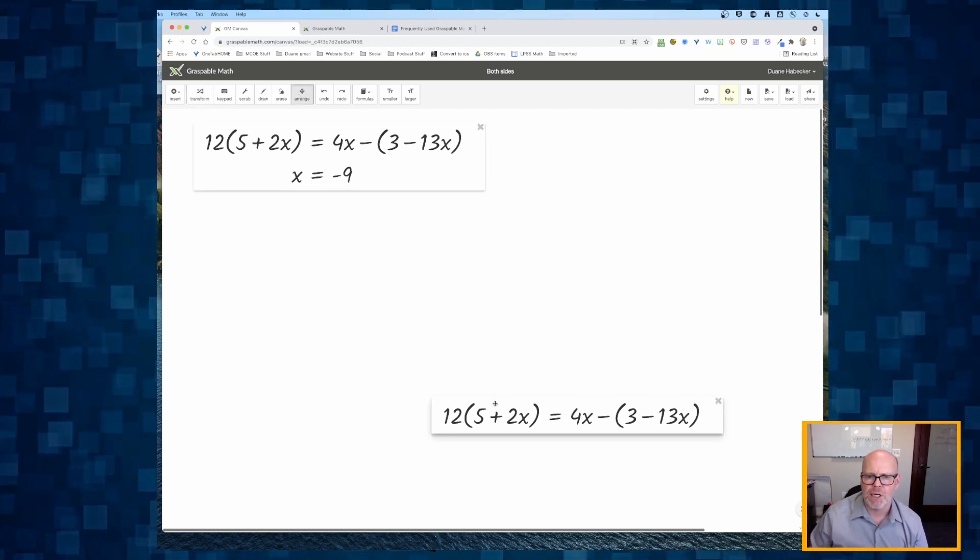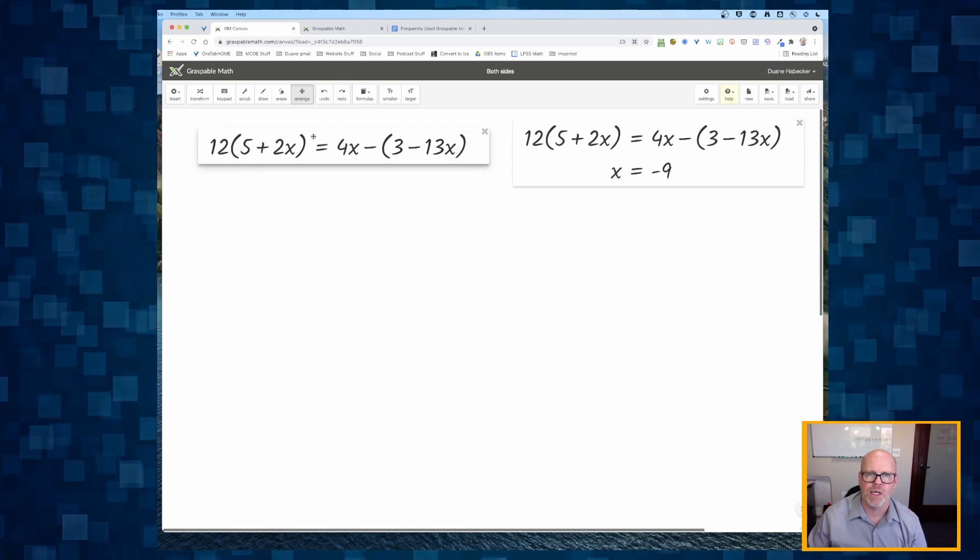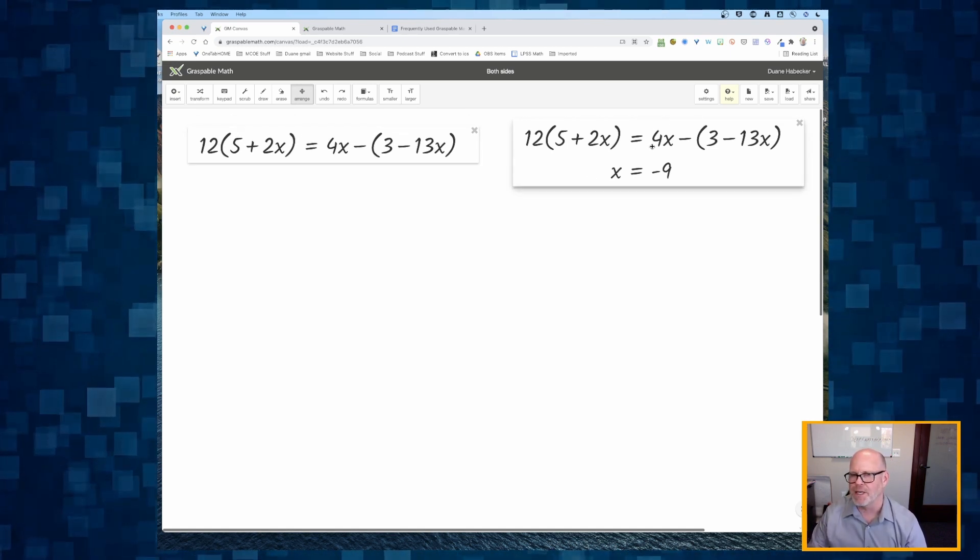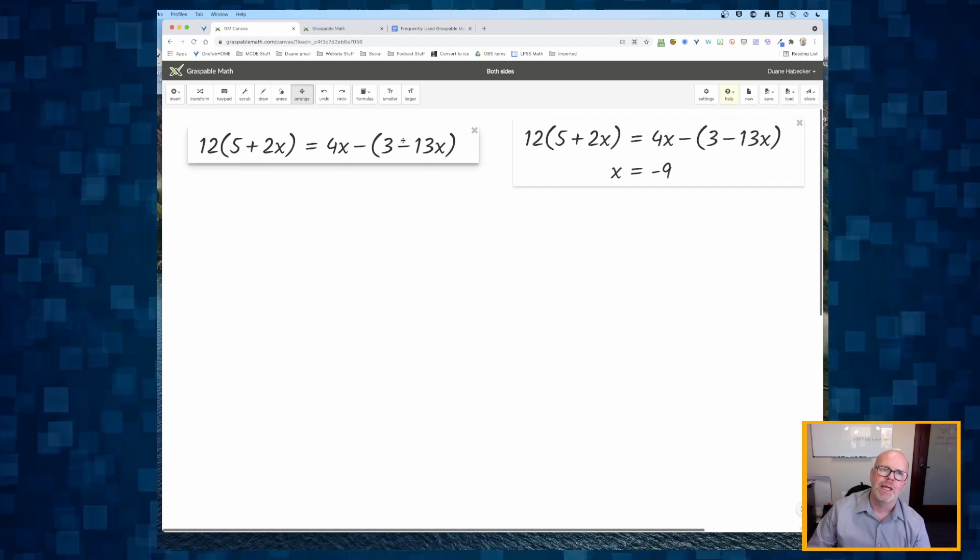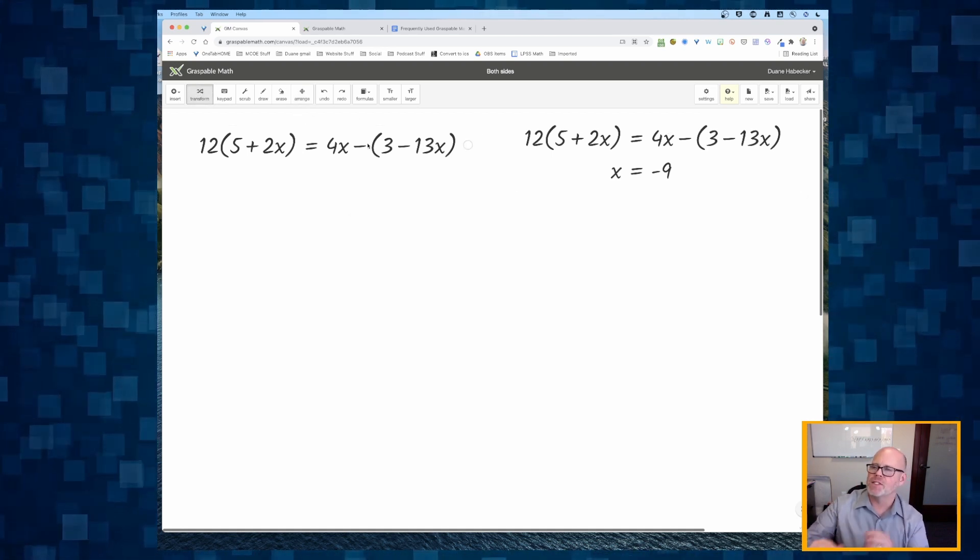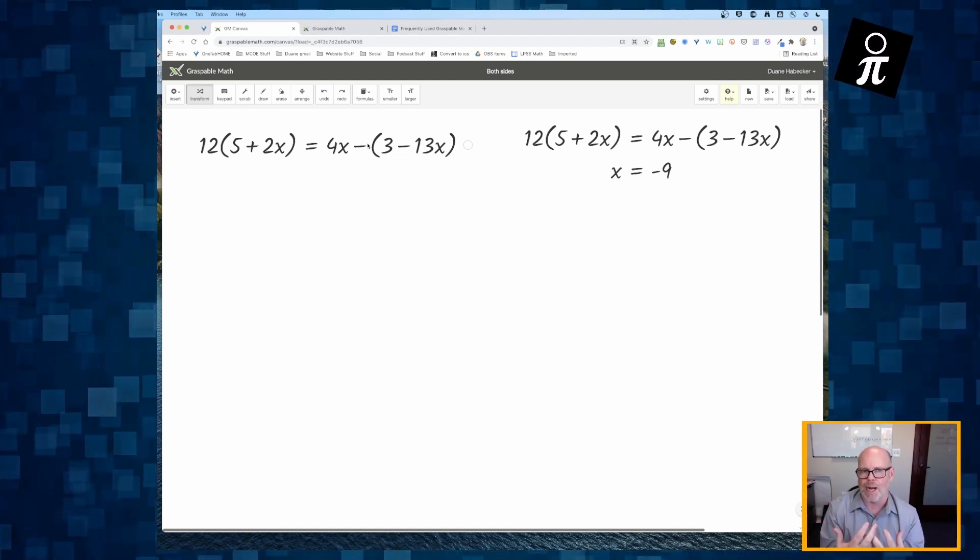I'm going to use the arrange button and let's put the equation on the right side. Let's put this equation on the left side. So the answer, we think x is equal to negative 9. I put it on the right side and now I'm going to click transform. And on this left side, this is where we're going to do the substitution to see if we're correct.